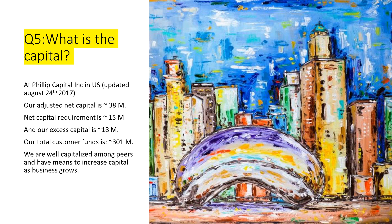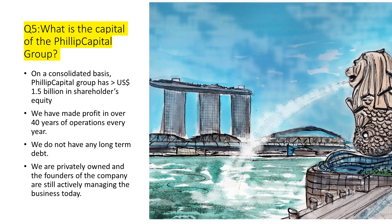For the Phillip Capital Group on a consolidated basis, we have more than $1.5 billion in shareholders' equity. We are a private company, have made profit in over 40 years as a whole group, and do not have any long-term debt. The founders of the company are still very active — the founder is my dad, and as many can testify, we were still in a very long conference call with him last night.